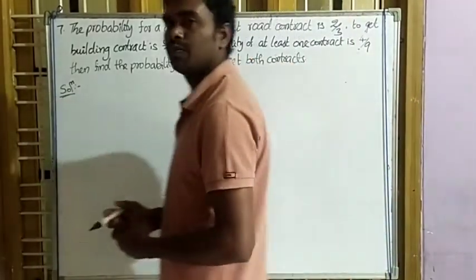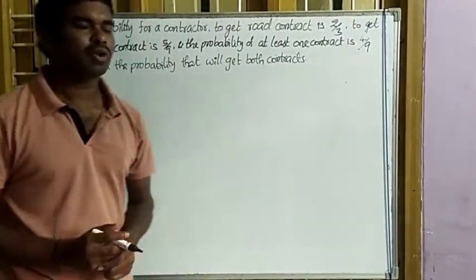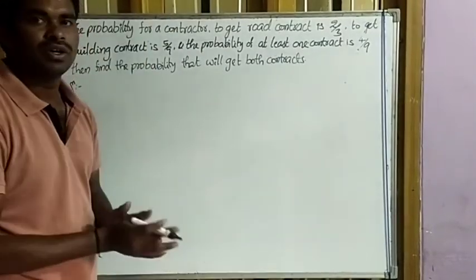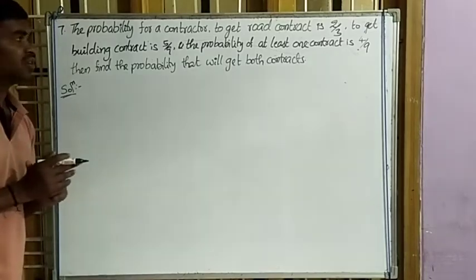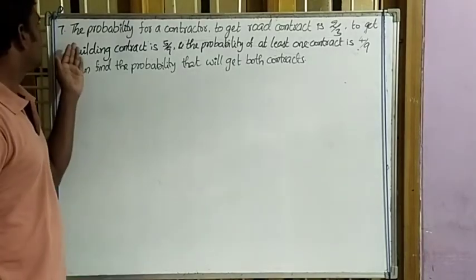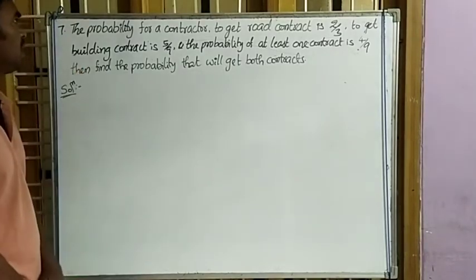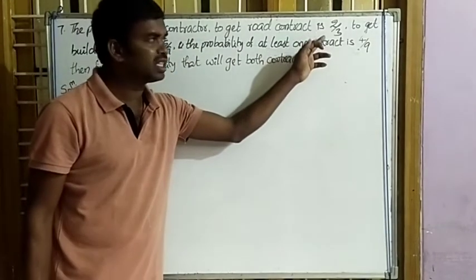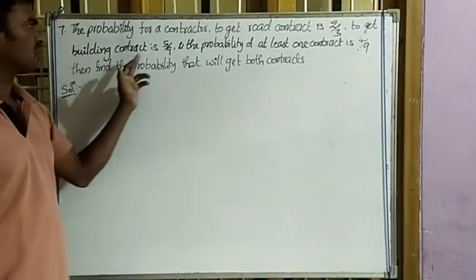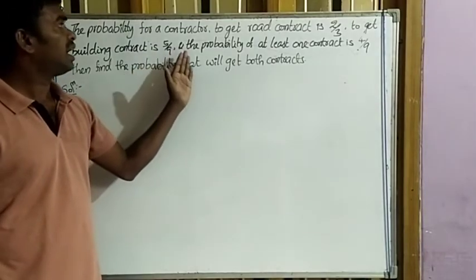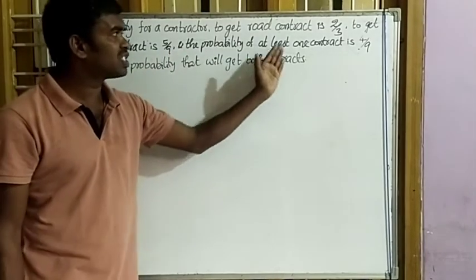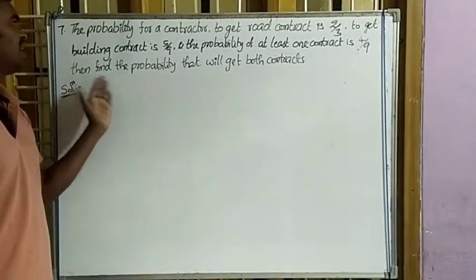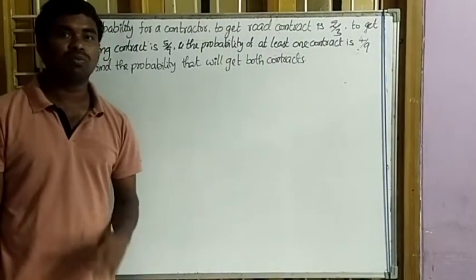Hello, hi everyone. 2nd year math 2A Probability Chapter, remaining 4 math questions. In this video we are going to learn the seventh question. The probability for a contractor to get a road contract is 2/3, to get a building contract is 5/9, and the probability of at least one contract is 4/9. Find the probability that he will get both contracts.